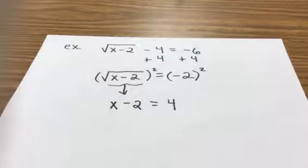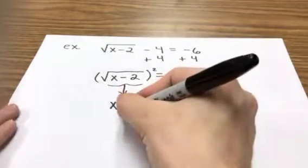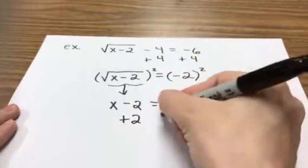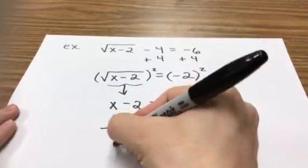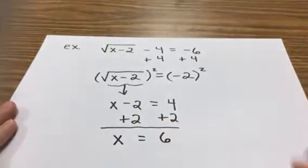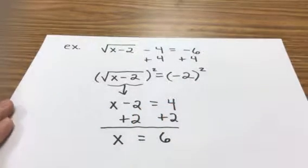And now we're ready to get the x by itself. And all I have to do is add 2 to both sides. So let's see what happens when I do that. So now we have x equals 6.